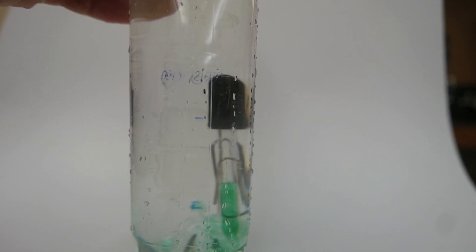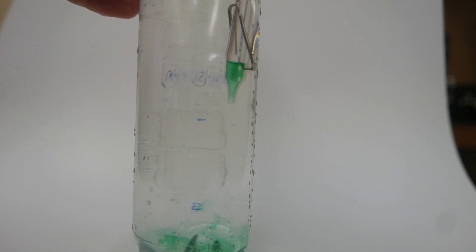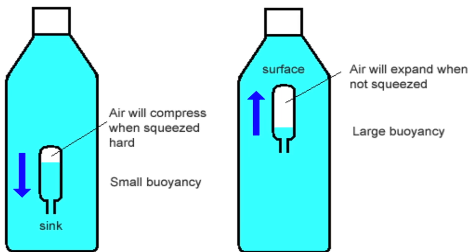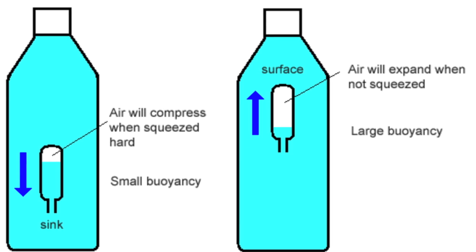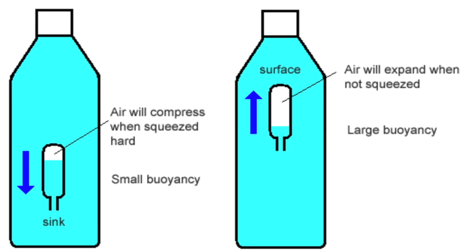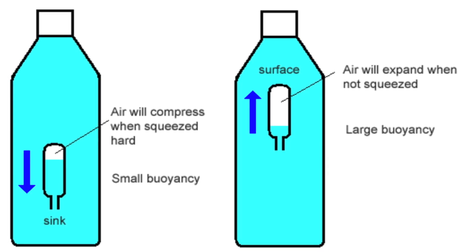The squeezing actually causes the air inside the dropper to be compressed. That means there's going to be less buoyant force than gravity, so the dropper sinks. When I release it, the air bubble gets larger, the buoyant force becomes greater than the pull of gravity, so the dropper floats. This would be part of Archimedes' principle.